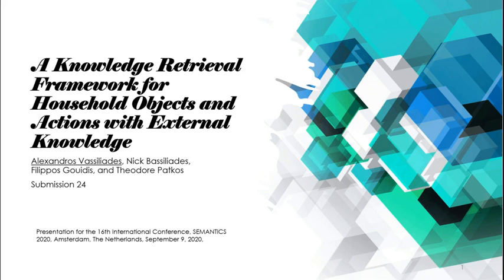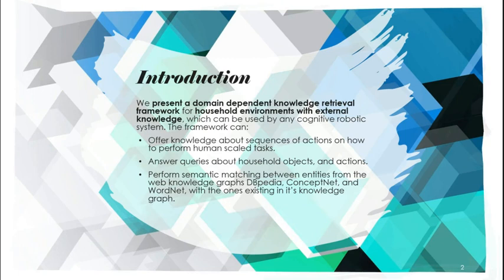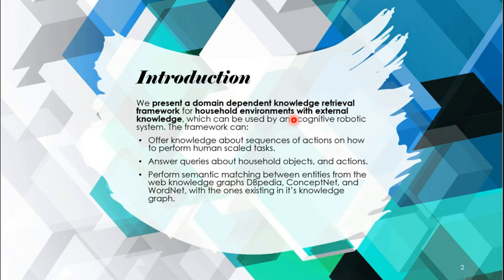We have constructed a domain-dependent knowledge retrieval framework for household environments with external knowledge, which can be used by any cognitive robotic system as a primary or secondary knowledge representation model. What we offer is knowledge about sequences of actions and how to perform human-scale tasks, answer queries about household objects and actions, and perform semantic matching between the nodes of our knowledge graph and external knowledge graphs.